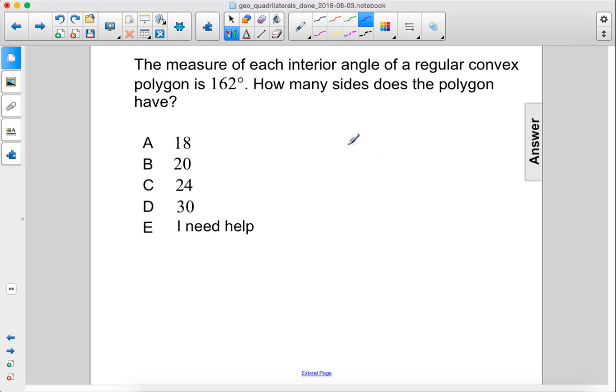The measure of each interior angle of a regular convex polygon is 162 degrees. How many sides does the polygon have?